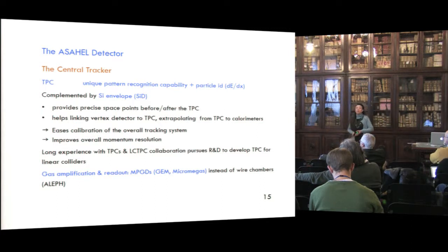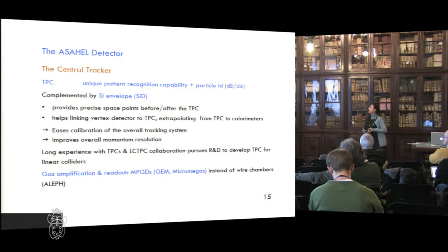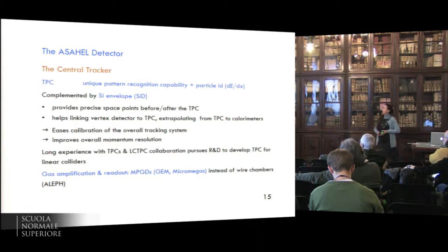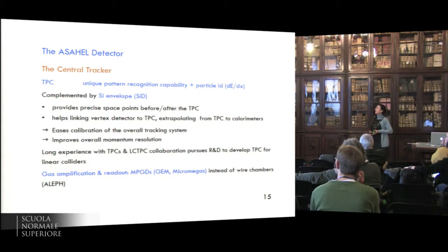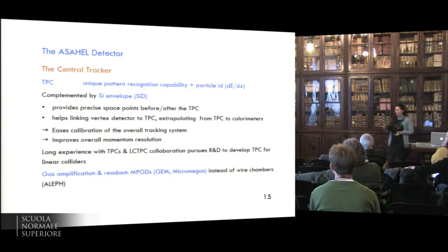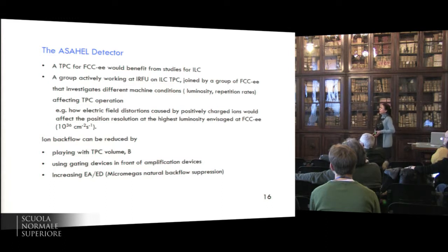For the central tracker, the TPC provides unique pattern recognition capability, with the bonus of a particle ID. And ILD has complemented the TPC with a silicon envelope that provides precise space points before and after the TPC, helps linking the vertex structure to the TPC, and helps also extrapolating from TPC to calorimeters, aids calibration of the overall tracking system, and improves the overall momentum resolution. We have long experience with the TPCs, and also there is a LHC-TPC collaboration that pursues R&D to develop TPC for linear colliders. And gas amplification and readout are done there with MPGDs, instead of wire chambers, as it was the case in ALEF.